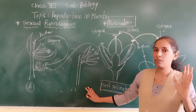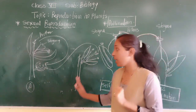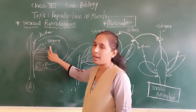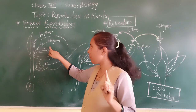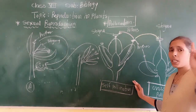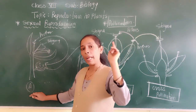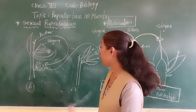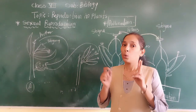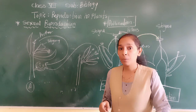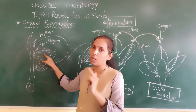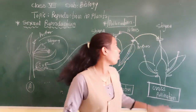So to keep it simple: if the pollen grain of the same flower gets transferred to the stigma of the same flower — only one flower is involved — then that is called self-pollination. If two different flowers of the same plant are involved, it is called cross-pollination. If two different plants are involved, it is also called cross-pollination.